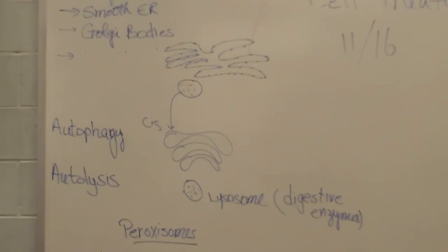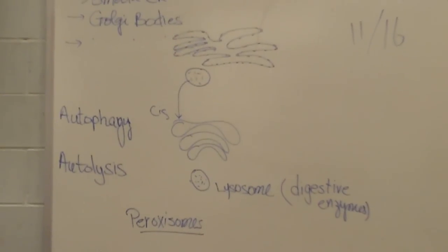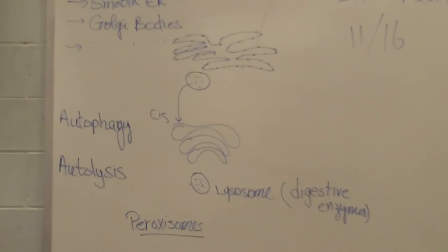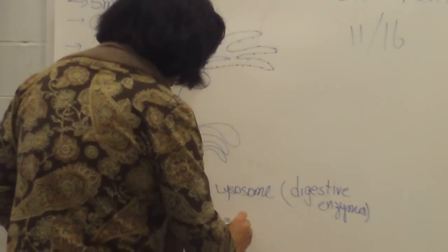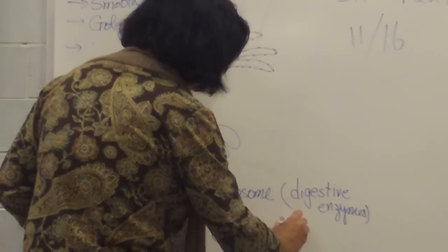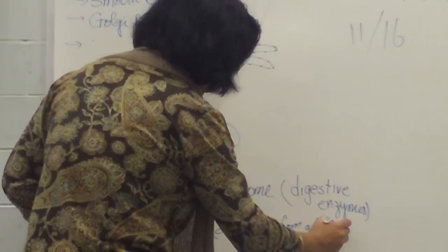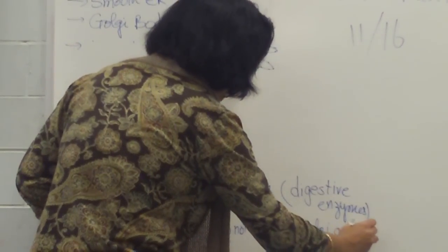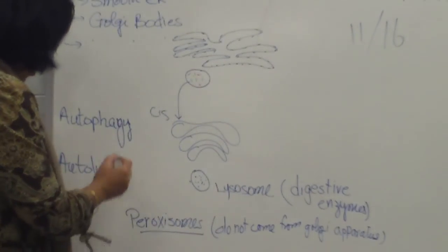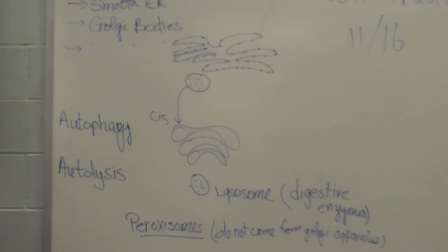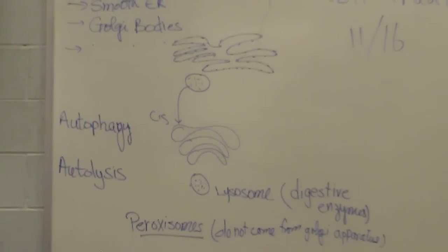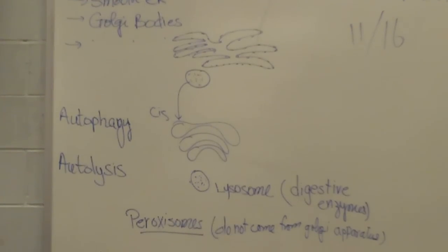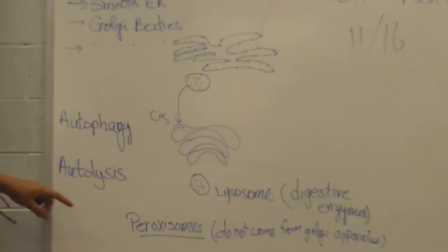Peroxisomes are also membrane-bound, which have different types of enzymes in them. They have enzymes which will break down fatty acids. They do not come from Golgi apparatus. Fatty acids. And they also break down like alcohol and some other substances. They neutralize free radicals. Yes, yes.